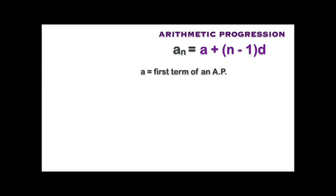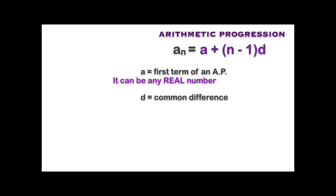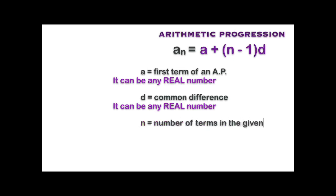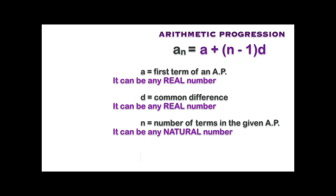Here, 'a' is the first term of the AP, which can be any real number — positive, negative, rational, or irrational. 'd' is the common difference, which is added to get the next term and can also be any real number. 'n' is the number of terms, which is any natural number.